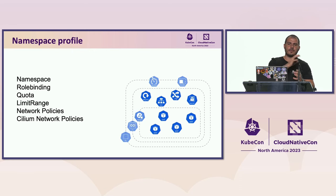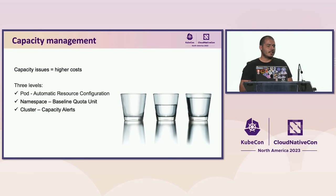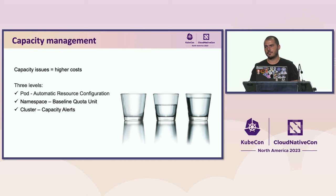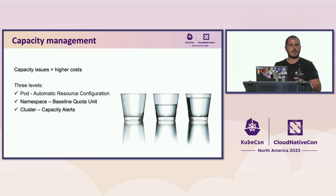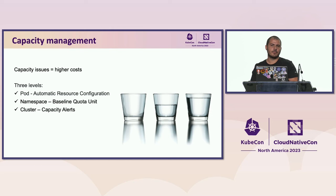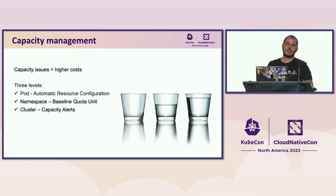In a multi-tenant environment, capacity management is a key consideration because capacity issues may result in higher costs. We tend to take actions at three levels: at the pod level using horizontal pod autoscaling, vertical pod autoscaling, and automatic resource configuration; at the namespace level using the concept of baseline quota unit; and at the cluster level with capacity alerts.